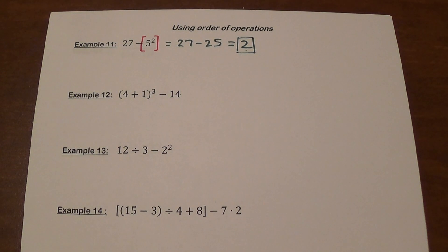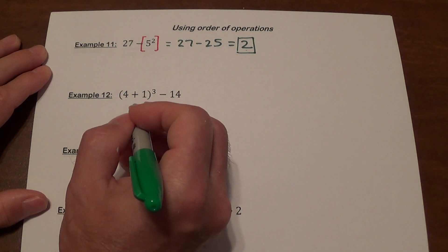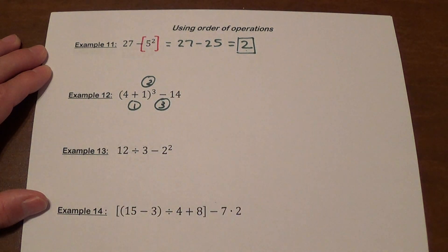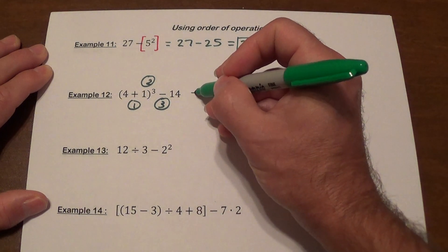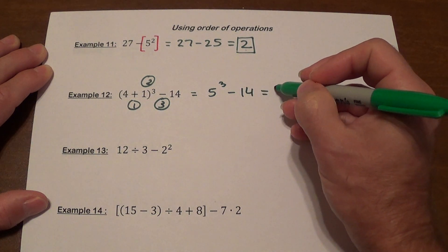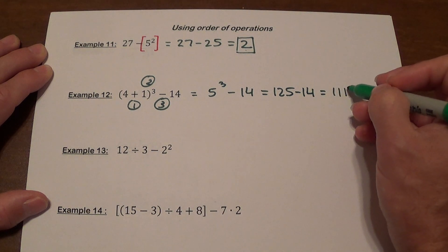Example 12 involves parentheses, exponents, and subtraction. Parentheses are always first: 4 plus 1 is 5. Then we apply the exponent: 5 cubed is 125. Finally, 125 minus 14 gives us 111.